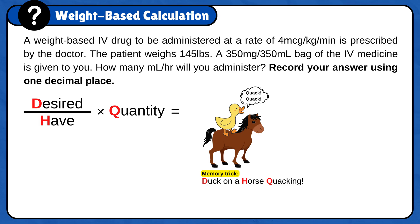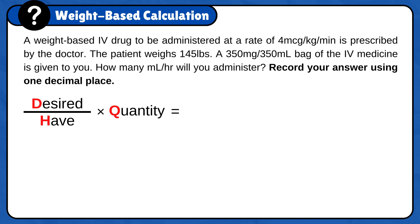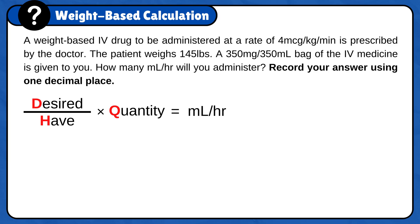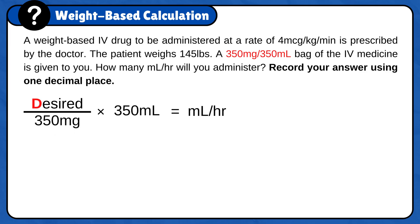The next step is to add the unit answer, milliliters per hour, because the question is asking how many milliliters per hour will you administer. Now that the formula is ready, we need to plug in the numbers. Start with half and quantity, because they are usually given to you and they come together. So for this problem, it is 350 mg in 350 ml.